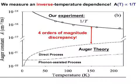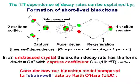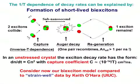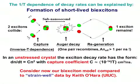However, time-resolved measurements of exciton density show an inverse temperature dependence for A, and it's four orders of magnitude larger than predicted by Auger theory. Our proposed answer to this puzzle is the binding of excitons into biexcitons. The inverse temperature dependence of the exciton decay rate is consistent with the formation of excitonic molecules, like two hydrogen atoms forming an H2 molecule. Biexcitons dominate at low temperature and have a very rapid Auger decay. In effect, the exciton Auger constant is replaced by the biexciton capture coefficient, which is inversely proportional to gas temperature and explains the exciton lifetime data.